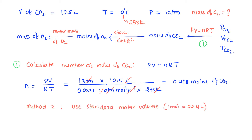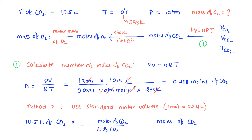Alternatively, we can use the standard molar volume to convert the volume of carbon dioxide into moles, since the conditions are at standard temperature and pressure. Starting with 10.5 liters, we multiply by the conversion factor of 1 mole per 22.4 liters. Liters cancel, and we get 0.468 moles of carbon dioxide — the same answer as the ideal gas equation method.